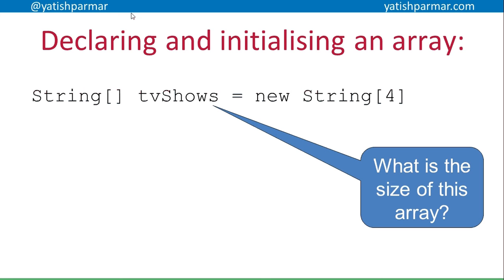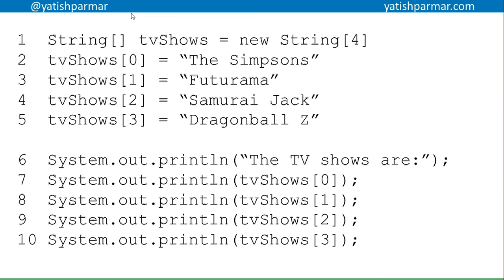The word we use is elements. Each element can be accessed by its index - the number within the square brackets. So tvShows[0], the index is 0; tvShows[1], the index is 1; and so on.